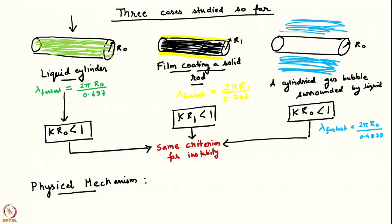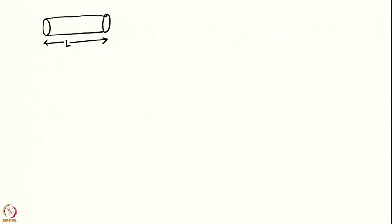Let us calculate the surface area and volume when we impose a perturbation on a liquid cylinder. For simplicity I will do this calculation on this example, but it will be relevant to the other two cases. We will do an axisymmetric calculation because we have seen that the unstable modes are the axisymmetric modes.